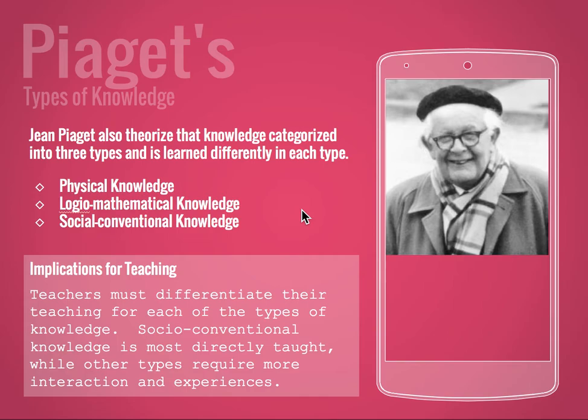The third kind of knowledge is social conventional knowledge. This is the easiest to teach because it consists of agreed-upon names and symbols transmitted to learners — basically anything we can tell them or show them that won't change. So definitions, the alphabet, counting, colors — these are basic concepts that cannot change no matter how we interact with them. There's one way.